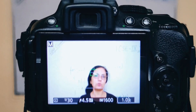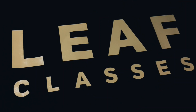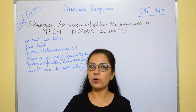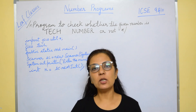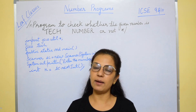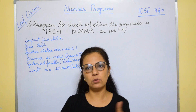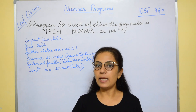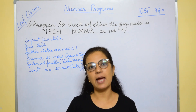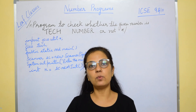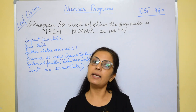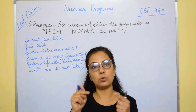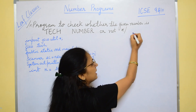So let's start. We begin with the first program: to input a number and check whether the number is a tech number or not. You don't have to learn the definition of all these numbers — they are always given in the question and you just have to go through it carefully and then do the program. For the tech number, a number is said to be a tech number if it has an even number of digits, and if we divide the number into two equal halves and find the sum of those two halves and then square it, and if that square is equal to the number, then the number is a tech number.